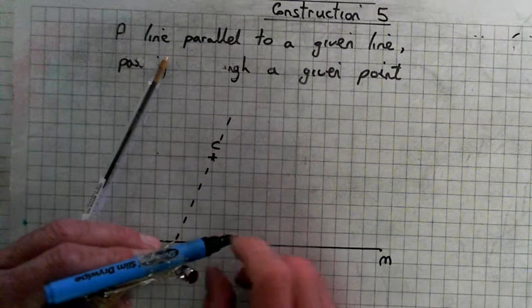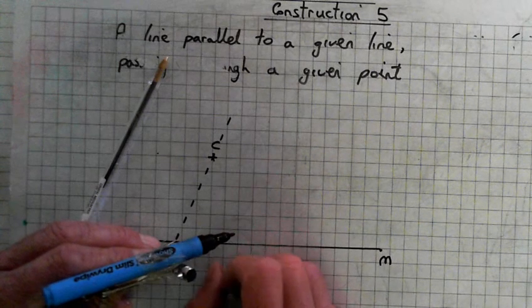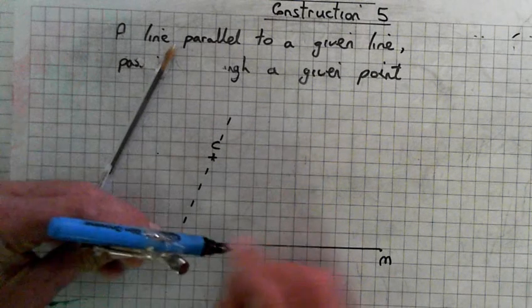Place the compass on point D and draw an arc across both lines. So we're going to draw an arc across this way.